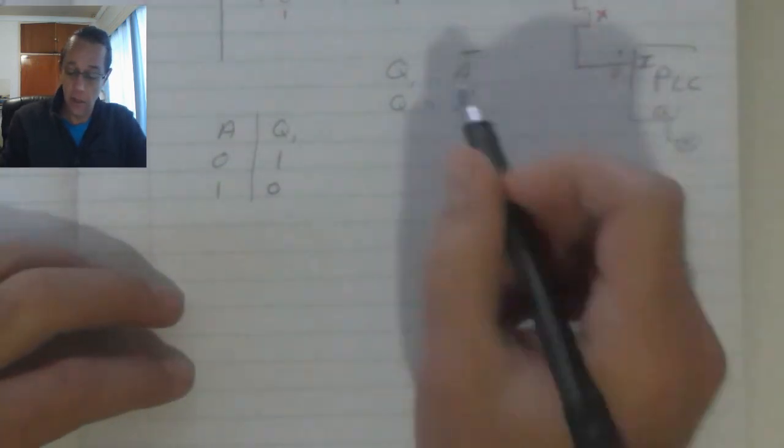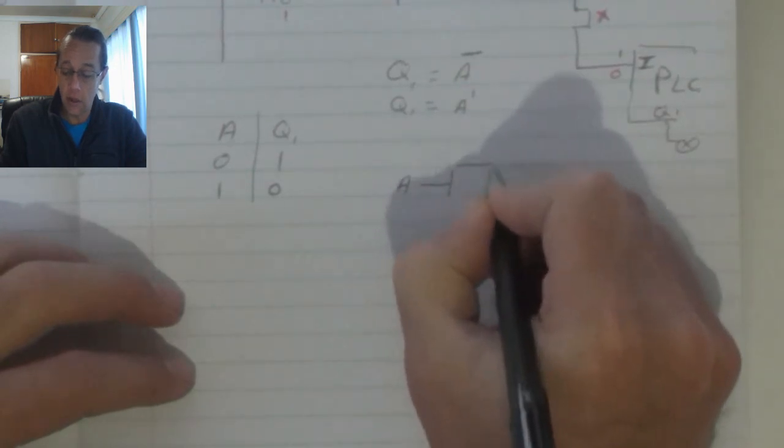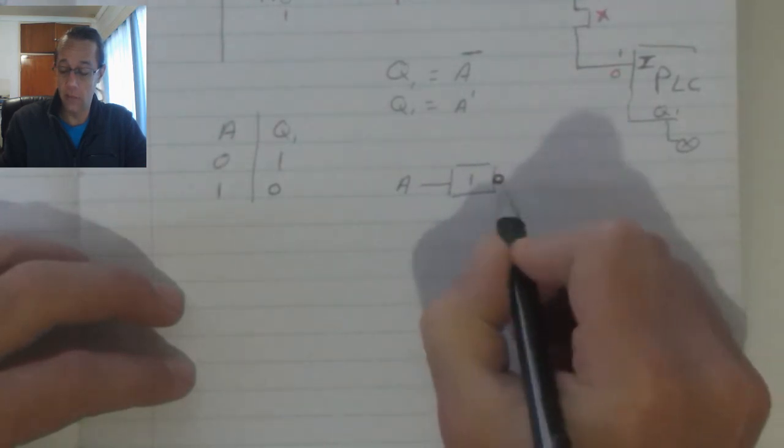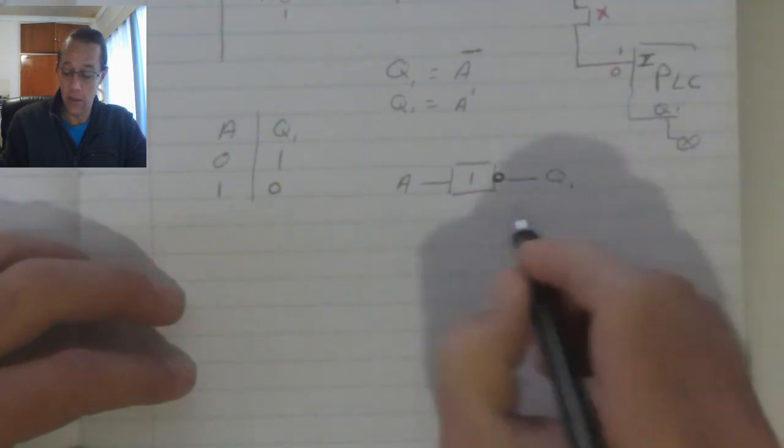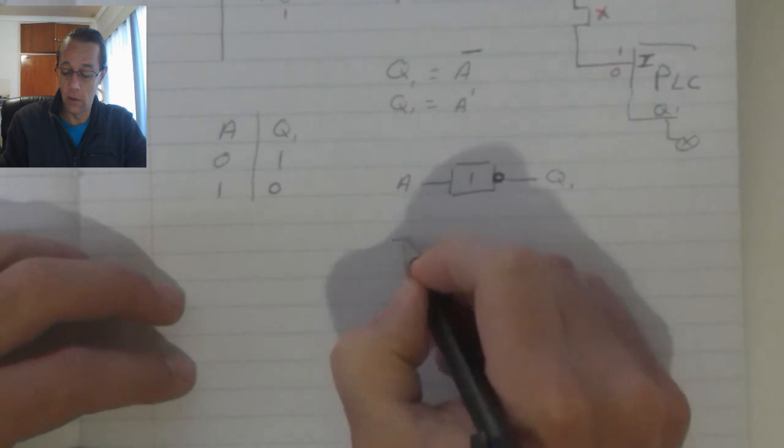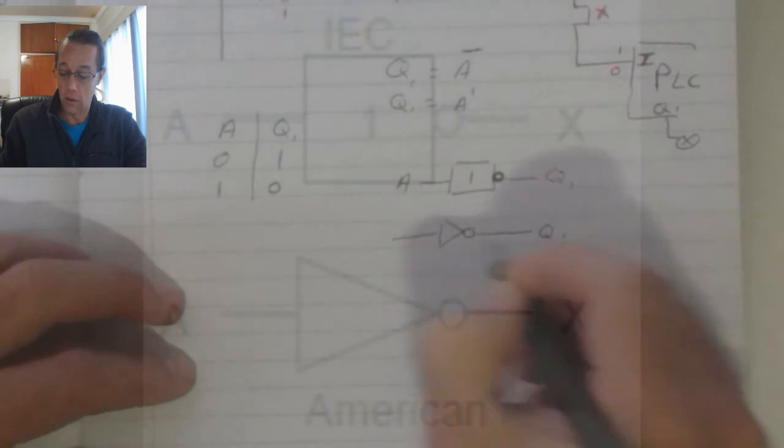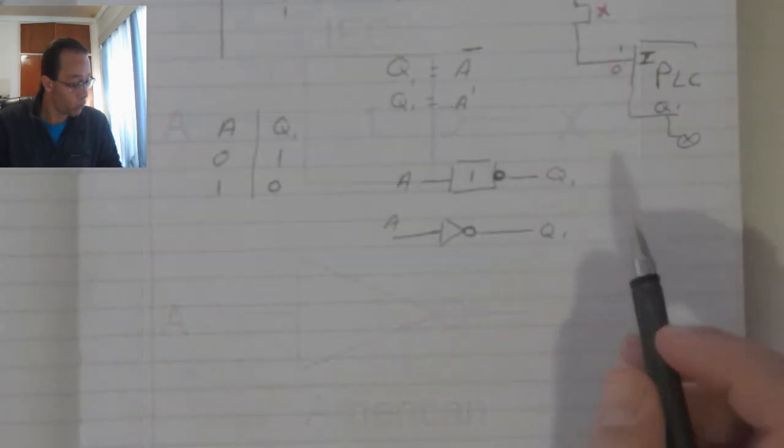To represent this in a functional block diagram, A goes in, and that one with that symbol over there, that circle there, means we're inverting the function. That's the IEC symbol, the American symbol looks like that. Again, we've got that invert function over there.